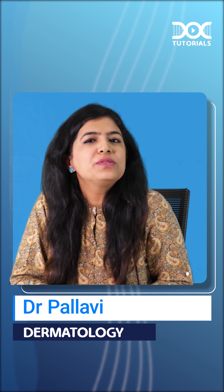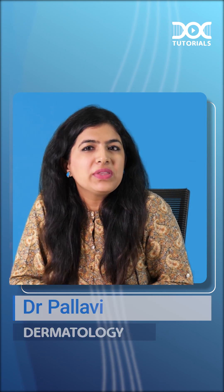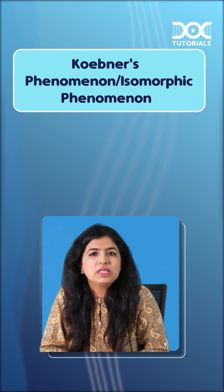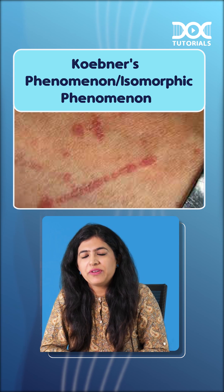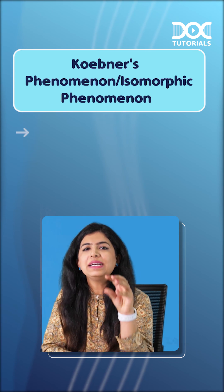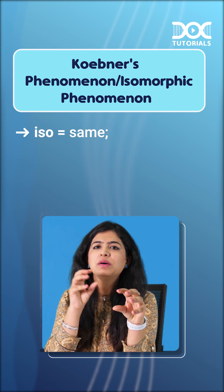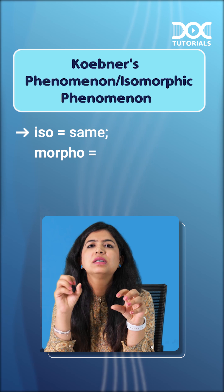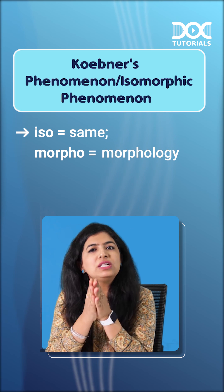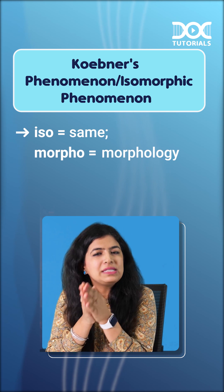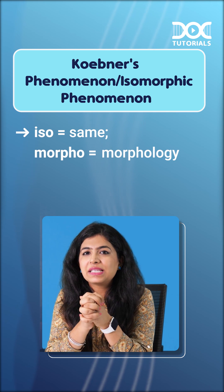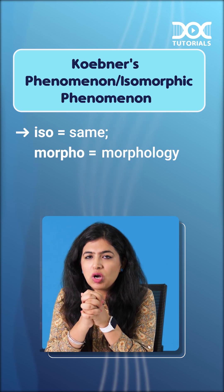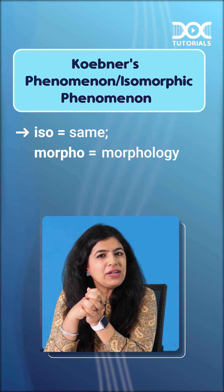Hello everyone. In today's quick learning bites, we'll be talking about the Koebner phenomenon, also called the isomorphic phenomenon. 'Iso' means same, 'morpho' means morphology, so here we have lesions of the same morphology appearing at sites of trauma.